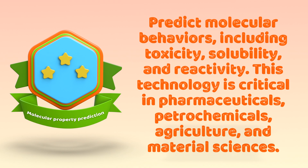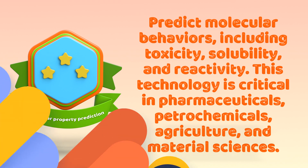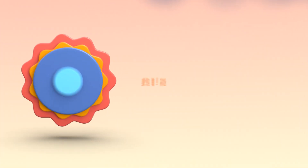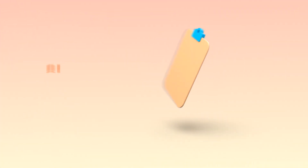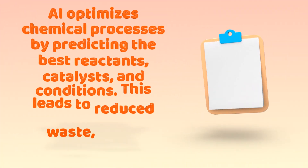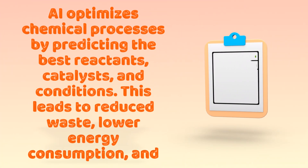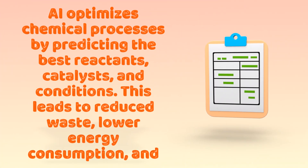This technology is critical in pharmaceuticals, petrochemicals, agriculture, and material sciences. AI optimizes chemical processes by predicting the best reactants, catalysts, and conditions.